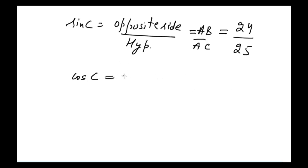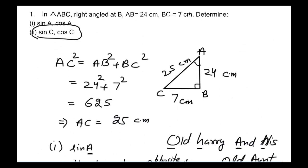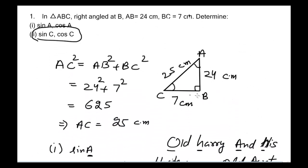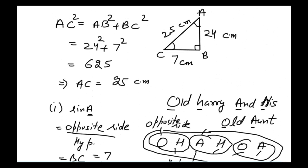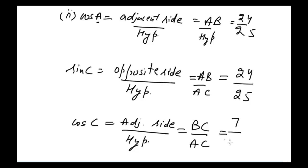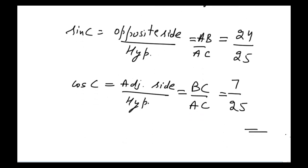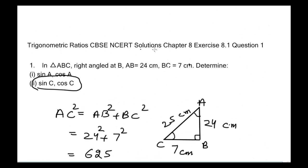The formula for cos is adjacent side divided by hypotenuse. The adjacent side to angle C is BC, and the hypotenuse is AC. So cos C = BC / AC = 7 / 25. That's it for Chapter 8, Exercise 8.1, Question 1 on trigonometric ratios. In the next video I'll be covering Chapter 8, Exercise 8.1, Question 2.